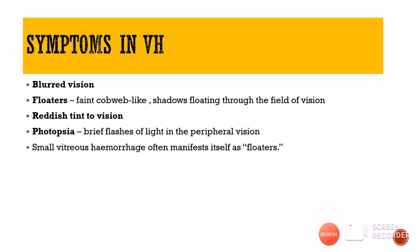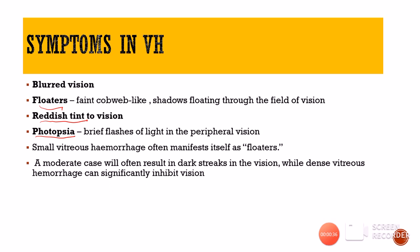The symptoms of vitreous hemorrhage vary from sudden painless complete vision loss to very mild hazy vision. Patients often describe new floaters of sudden onset, described as faint cobweb-like shadows. Less commonly they describe a reddish tint to their vision. Some patients also describe seeing flashes of light in their peripheral field — called photopsias — from traction applied to the retina.